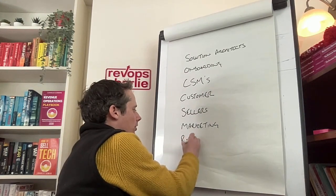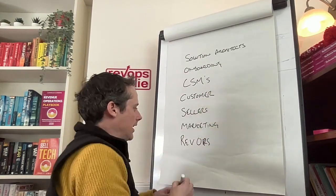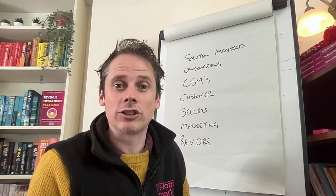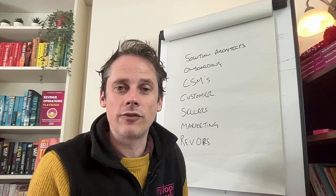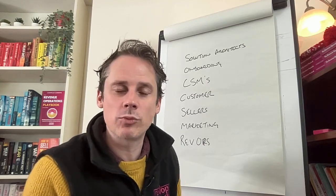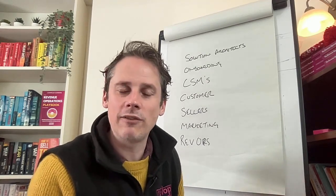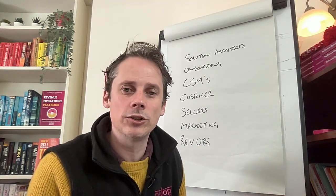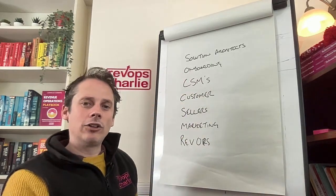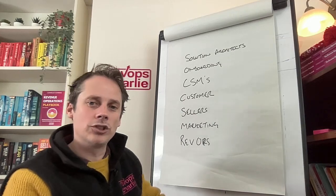And then finally, depending on how your organization is structured, your ops team or rev ops team are going to be responsible for integrating the outcomes of these reports and making sure they're visible in the right locations — whether that is your CRM, marketing automation platforms, or your BI tool. So those are the main sets of stakeholders involved in the creation of your buyer enablement tool.